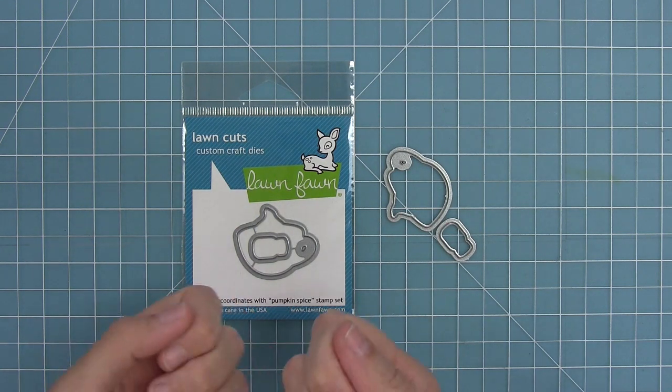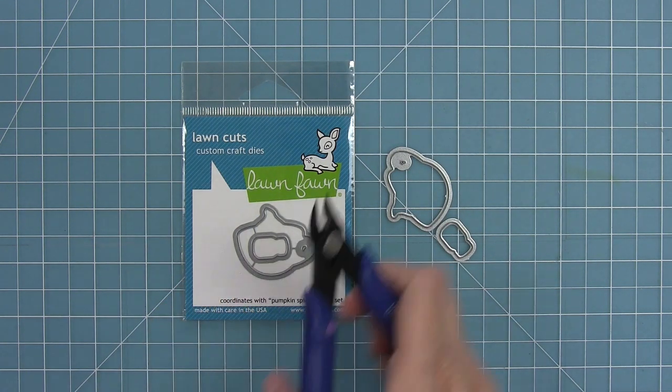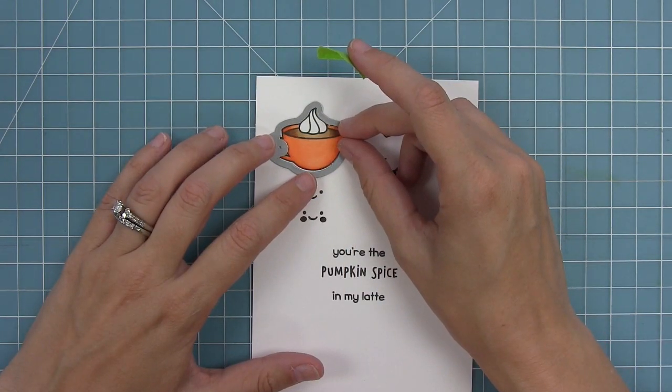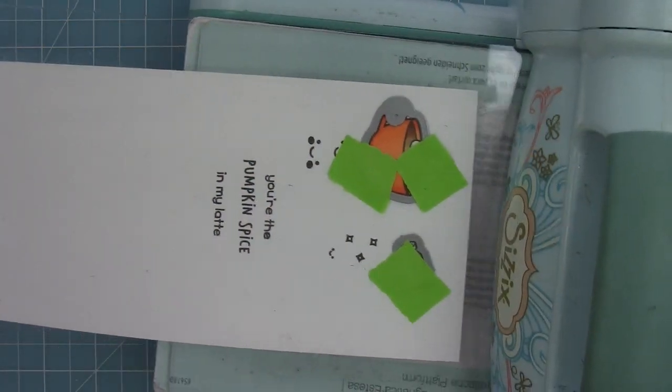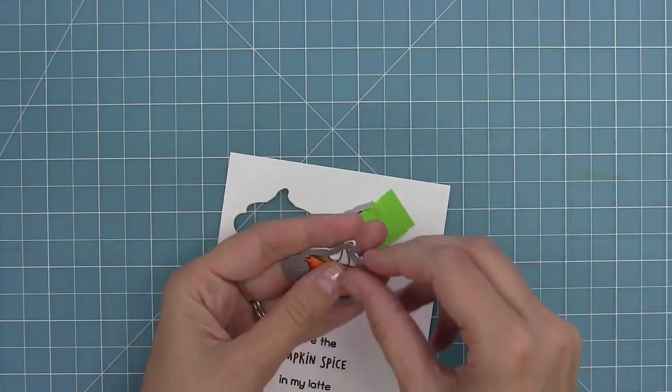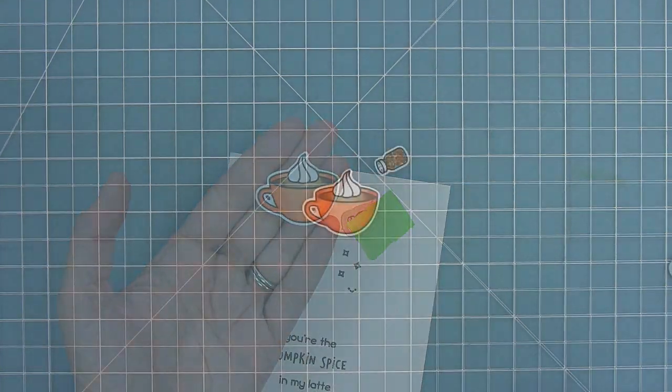Now these are the coordinating dies which you can bend apart at the tabs or use your wire snips to separate them. I'm going to take them and line them up with the images in the set, hold them in place with some low tack tape, and then run it through my die cut machine. And so here you can see just how cute it is when it pops out of that die.